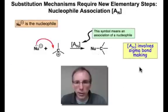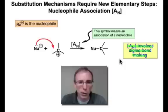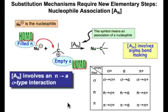The elementary step known as AN or association of a nucleophile involves sigma bond making, and the curved arrows show that the source of the electrons, the filled orbital is a non-bonding pair of electrons centered on the nucleophile that reacts with an empty atom-centered orbital on the carbocation, and that pair of electrons is involved in making the new nucleophile to carbon bond. And so in terms of molecular orbitals, the filled non-bonding pair of electrons finds the empty atom-centered orbital on the carbocation, and we have an N-to-A sigma-type interaction.